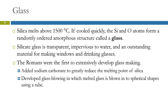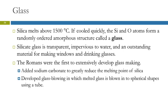Glass is another covalent atomic solid. If you take silica and melt it — it melts at about 1500 degrees Celsius — and cool it quickly, the silicon and oxygen atoms form an amorphous structure rather than a crystalline structure. That is called glass. Silicate glass is transparent and impervious to water.